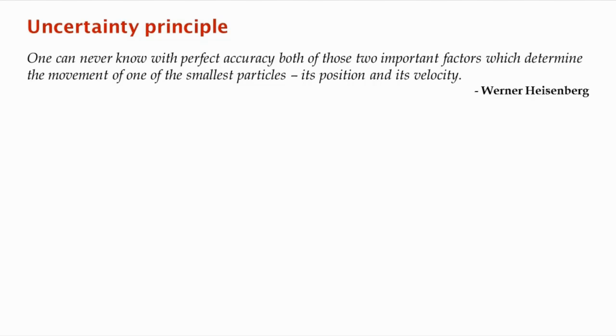You see, what we were trying to do was pin down the position of the electron, whether it went through slit one or slit two. And the point was, in our attempt to figure out which slit, we were giving it enough of a kick so we were changing its velocity or its momentum sufficiently so that it destroyed the interference pattern.